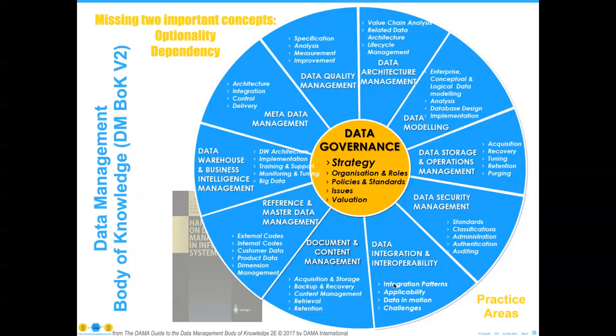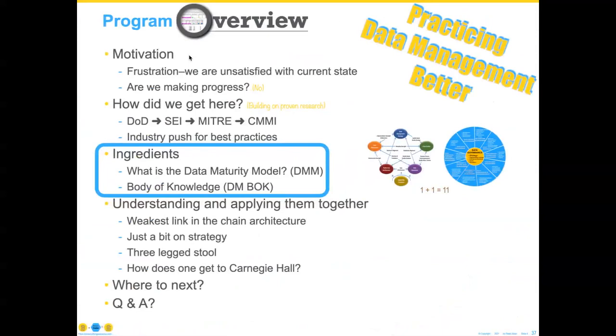Let me suggest two important improvements needed on the next visual representation of the DMBOK. The first is that there's no sense of optionality — people look at it and say, 'The DMBOK says I must do content and document management.' Well, no. The DMBOK says it's part of data management, but we weren't as articulate as we wanted to be. This should be marked as 'maybe.' Another component that would be really helpful is the idea of dependency — where should one start? If one doesn't know where to start, it becomes difficult all the way around.